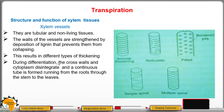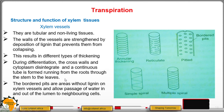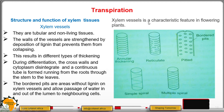During differentiation, the cross-walls and cytoplasm disintegrate and a continuous tube is formed running from the roots through the stems to the leaves. The bordered pits are areas without lignin on the xylem vessels and allow passage of water in and out of the lumen to neighboring cells, ensuring a continuous supply of water. Xylem vessels are a characteristic feature in all flowering plants.